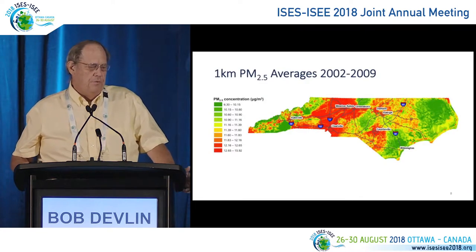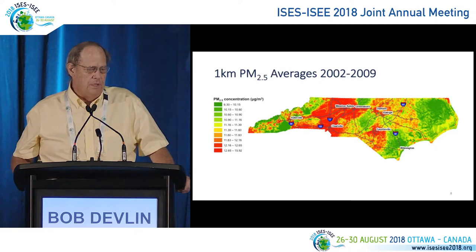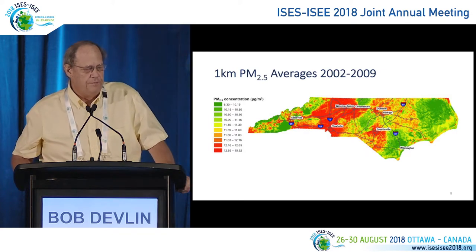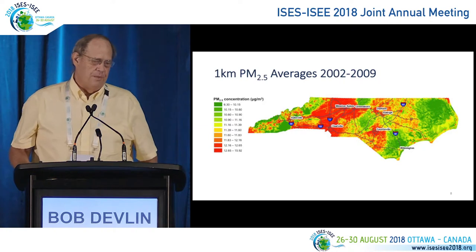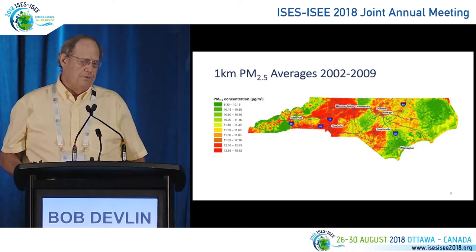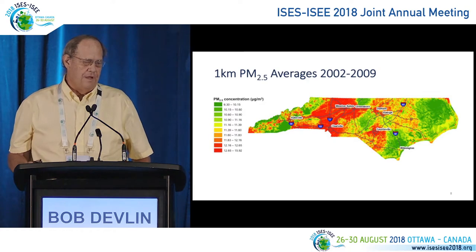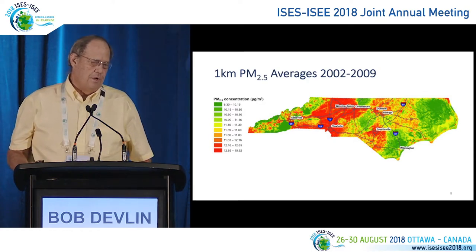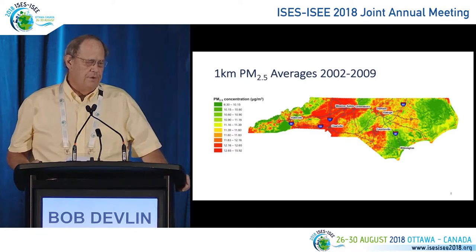This slide shows what North Carolina looks like using Joel Schwartz's 1 kilometer resolution model. You can see a nice gradient of exposure throughout North Carolina, with various areas of lower population density and higher concentrations along the I-85 corridor including Research Triangle Park, Raleigh, down to Charlotte through Winston-Salem. Again, this is at 1 kilometer resolution.